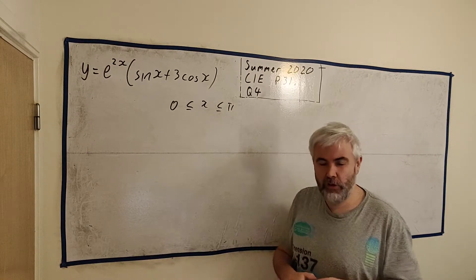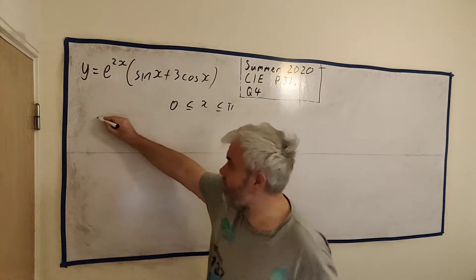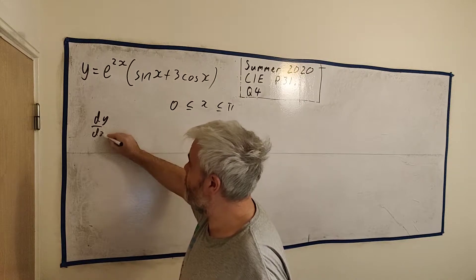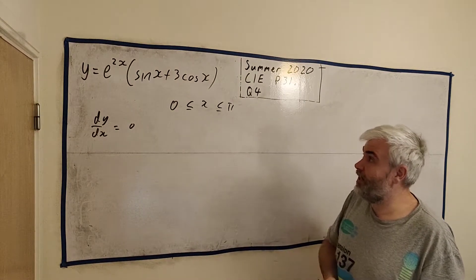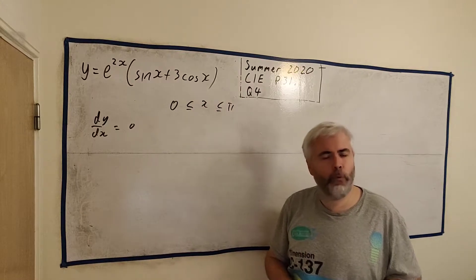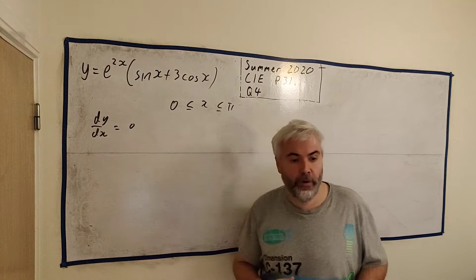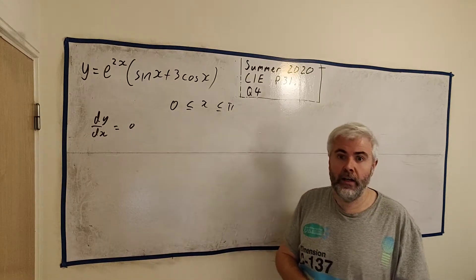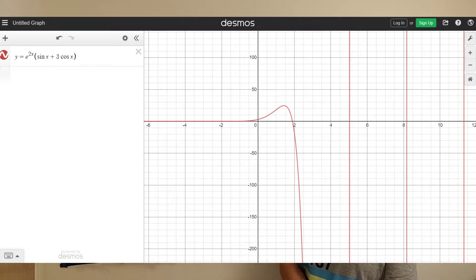The first thing you should be thinking when you're asked the question about stationary points is simply dy/dx equals 0. Before I go any further, in an exam you won't have access to this but when you're studying it can be good to put the equation into an online calculator and see what it looks like. So I'm going to pop that up on the screen right now.